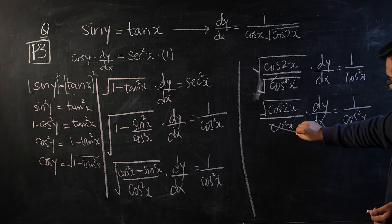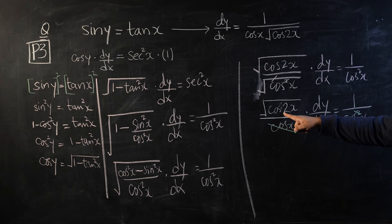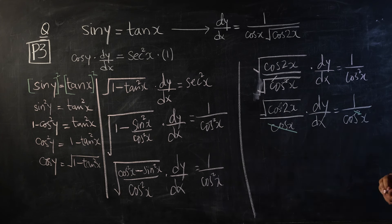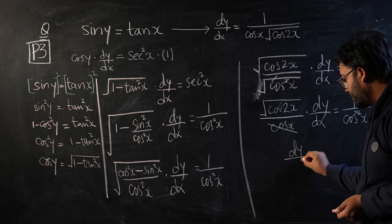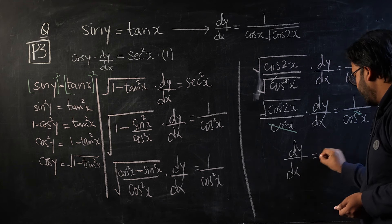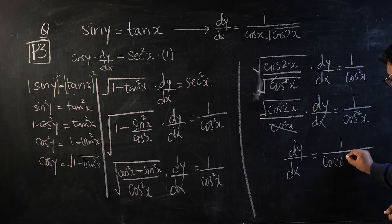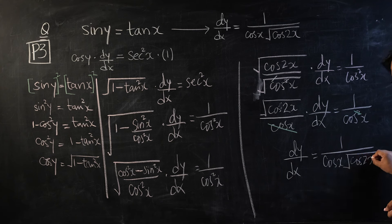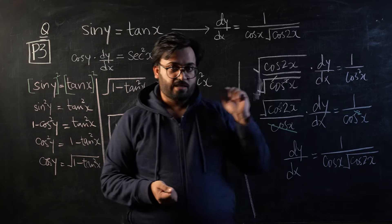This one cos x can get cancelled with one of the cos x in the denominator on the right side. Bringing the square root term into the denominator, the final answer becomes dy/dx equals 1 over cos x times the square root of cos 2x. This is the final answer — this is what we had to prove.